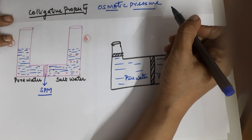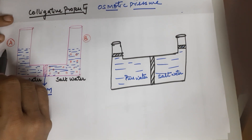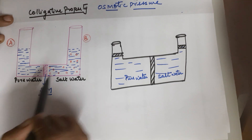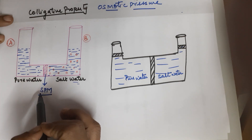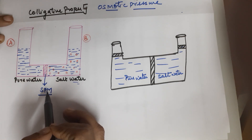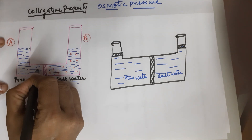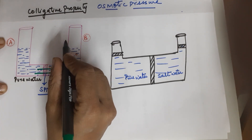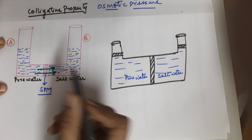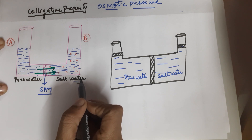I have a U-tube in which there are two solutions on both sides. This is the A chamber and this is the B chamber. The A chamber consists of pure water while the B chamber has salt water, and there is a semi-permeable membrane between the two. Semi-permeable means it allows only the flow of water. Over a period of time, water starts to flow from one chamber to another — the level on the salt water side starts rising.